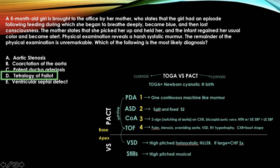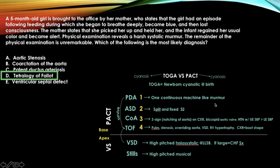The answer is tetralogy of Fallot. Cyanosis in a child who is a five-month-old girl — not a baby cyanotic at birth — so go straight to TOF. Another giveaway: the child had cyanosis and then became normal, which is also a sign of TOF. All pediatric murmurs on the chart are systolic, so the systolic murmur descriptor doesn't narrow it further.